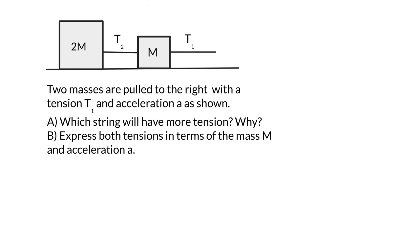So let's look at this problem here. We have two masses and two strings. We're basically going to pull on this mass to the right, giving it an acceleration, and we want to figure out a couple things. The first thing I'd like you to do is predict which of these two strings, T1 or T2, is going to have greater tension, or are they going to be equal? Then see if you can go ahead and solve them, expressing these tensions in terms of M and A. Go ahead and pause the video now, and then I'll do it with you.